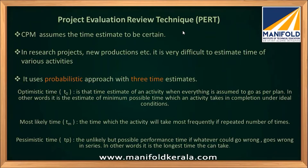In PERT, they use three time estimates for calculating the expected time for each activity. Once you calculate the expected time, the rest is similar to CPM — you continue with the other steps involved in CPM. The three time estimates are: optimistic time, most likely time, and pessimistic time.